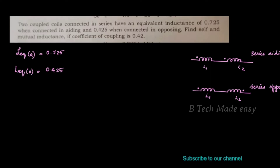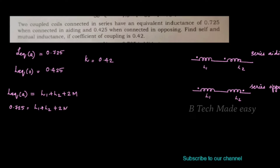The self-inductance and mutual inductance are to be found. The coefficient of coupling k is equal to 0.42. The aiding condition gives the equation: L equivalent aiding is equal to L1 plus L2 plus 2M. Substituting: 0.725 equals L1 plus L2 plus 2M. This is equation number 1.